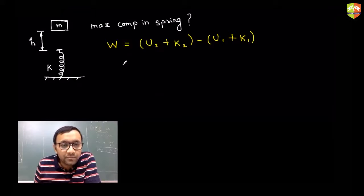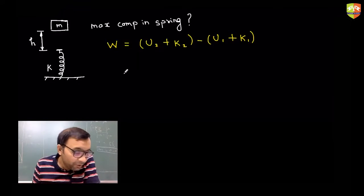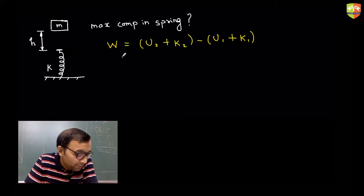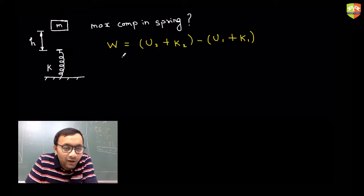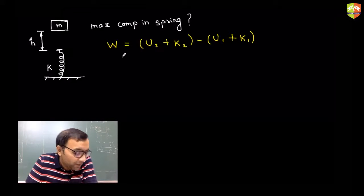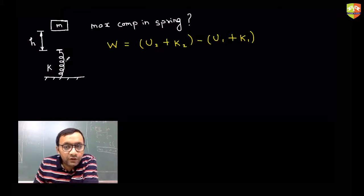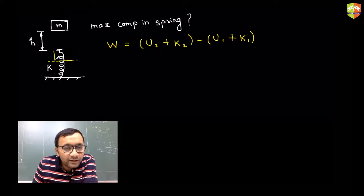Let's assume that when the block hits the spring, the spring gets compressed by a distance X. So X is the maximum compression. I'll take my second point there — point number one is the initial position and point number two is where the spring gets compressed maximum.